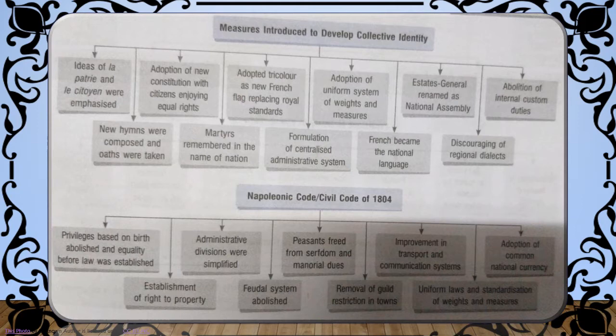At the same time, we studied the Napoleonic Civil Code of 1804, or the Napoleonic Code. This included: privileges based on birth were abolished, equality before law was established, establishment of the right to property, administrative divisions were simplified, the feudal system was abolished, peasants were freed from serfdom and manorial dues, removal of guild restrictions in towns, improvement in transport and communication systems, uniform laws and standardization of weights and measures, and adoption of a common national currency.